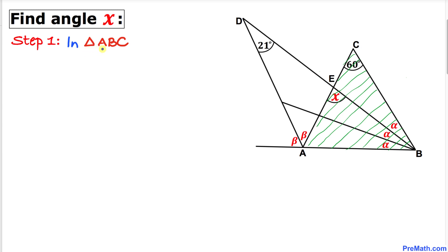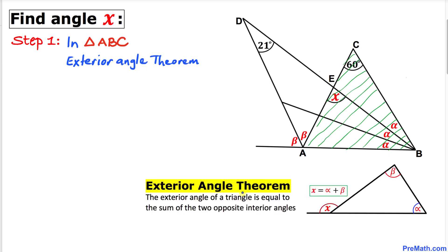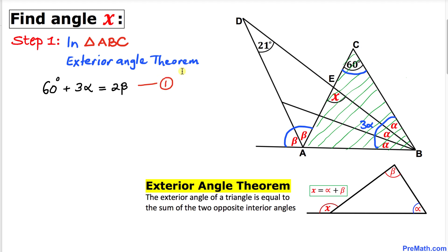Let's get started with the solution. In our first step, let's focus on triangle ABC and recall the exterior angle theorem. Here, beta plus beta becomes 2 beta as our exterior angle, and that is equal to the sum of the two opposite interior angles: alpha plus alpha plus alpha becomes 3 alpha, plus the opposite interior angle of 60 degrees. So we can write equation 1: 60 degrees plus 3 alpha equals 2 beta.